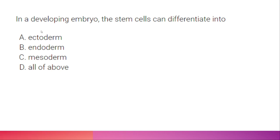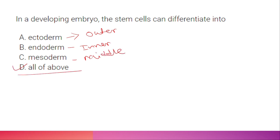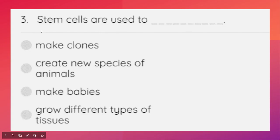In a developing embryo, stem cells can differentiate into ectoderm, endoderm, and mesoderm — ecto meaning outer, endo meaning inner, and meso meaning middle. So stem cells can differentiate into any kind of cell — all of the above. Stem cells are used to grow different types of tissues.